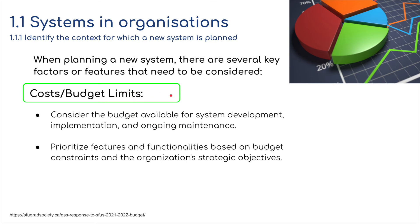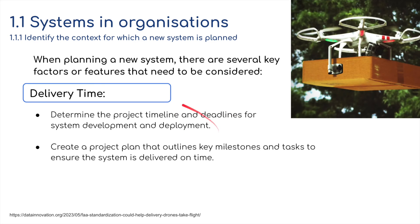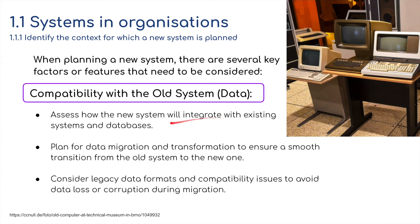There are costs and budget limits to consider. We need to prioritize features and functionality based on budget constraints and the organization's strategic objectives. In terms of delivery time, we should determine project timelines and deadlines, possibly creating a project plan with milestones and an end date. We also need to check whether data on the old system is compatible with new software — for example, will something created in Microsoft Office 2007 work with Office 2023? Will there be problems with macros and essential tools used in the past?